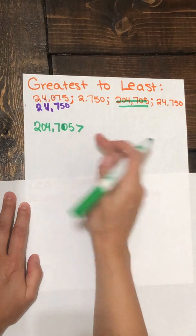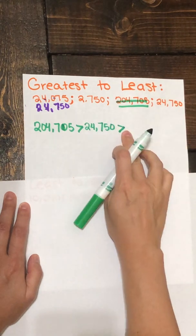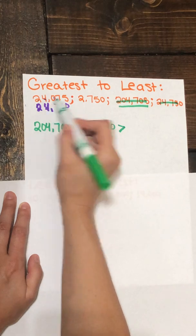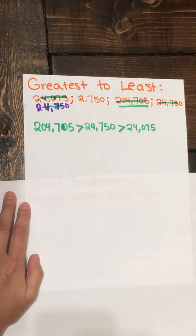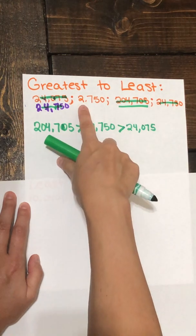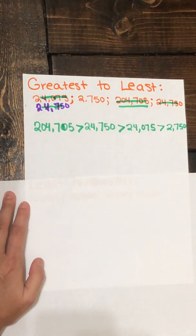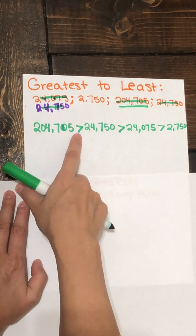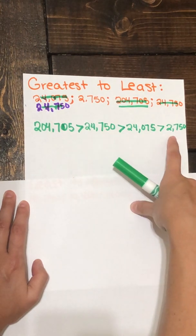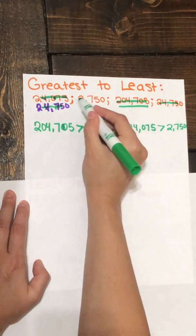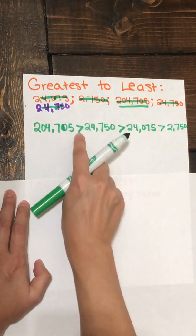So we have 204,705. That's greater than 24,750 which is going to be greater than our next number of 24,075. So now I only have one more number left and that's going to be our smallest value of 2,750. So let's read this number sentence. 204,705 is greater than 24,750 which is greater than 24,075 which is greater than 2,750. So I have now ordered these four numbers from greatest to least using my comparison symbol.